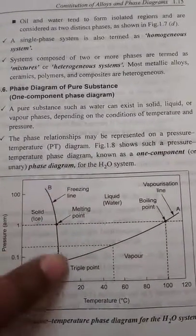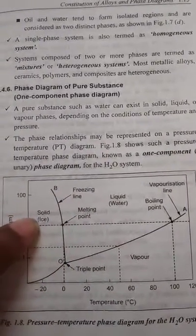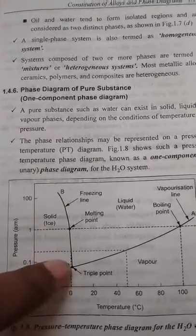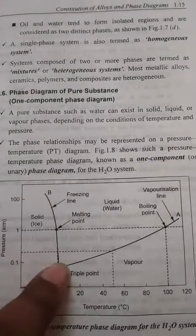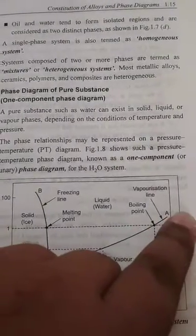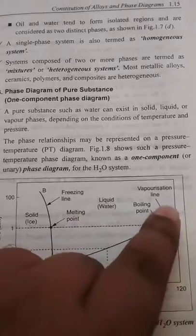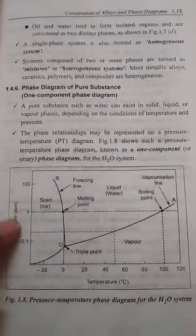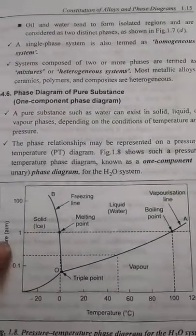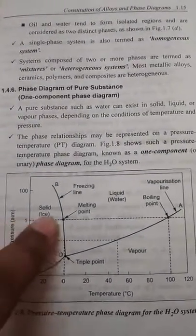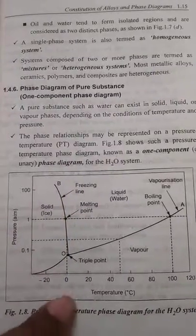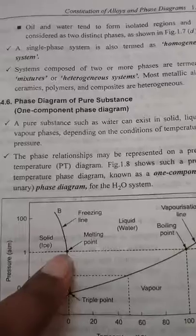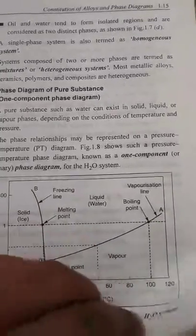The freezing line is called a two-phase line because on one side you have a solid phase and on the other side a liquid phase. Similarly, the vaporization line is also a two-phase line because on one side you have liquid and the other side is vapor. Using this phase diagram, at a particular pressure and temperature we can determine what condition the water molecule is in. This is the basis of phase diagrams.